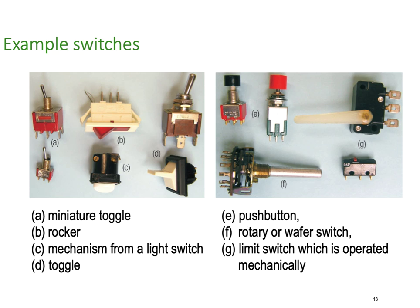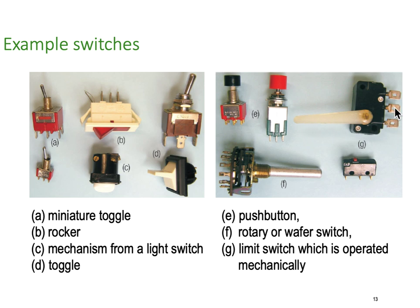Here's a range of switches. A is a miniature toggle. B is a power rocker toggle switch. C is what we would call a light switch mechanism. D are toggles. E are push buttons — just push down on the button to operate them. F is a rotary selector switch, sometimes called a wafer switch because it's made up out of all these wafers. G are limit switches — they've got a mechanical arm that operates the switch.